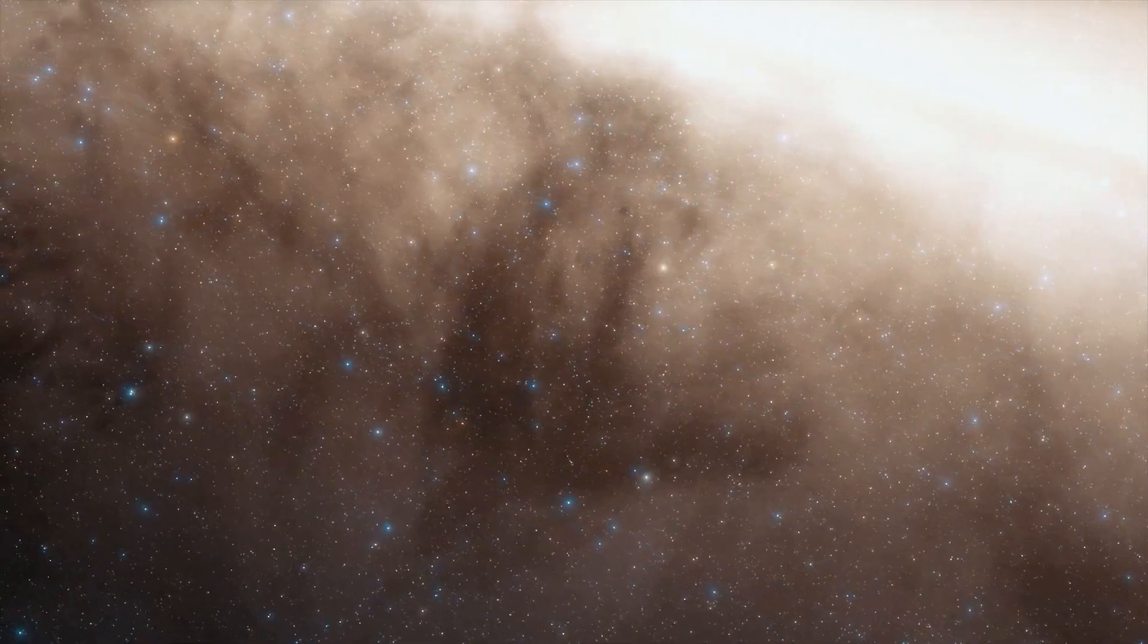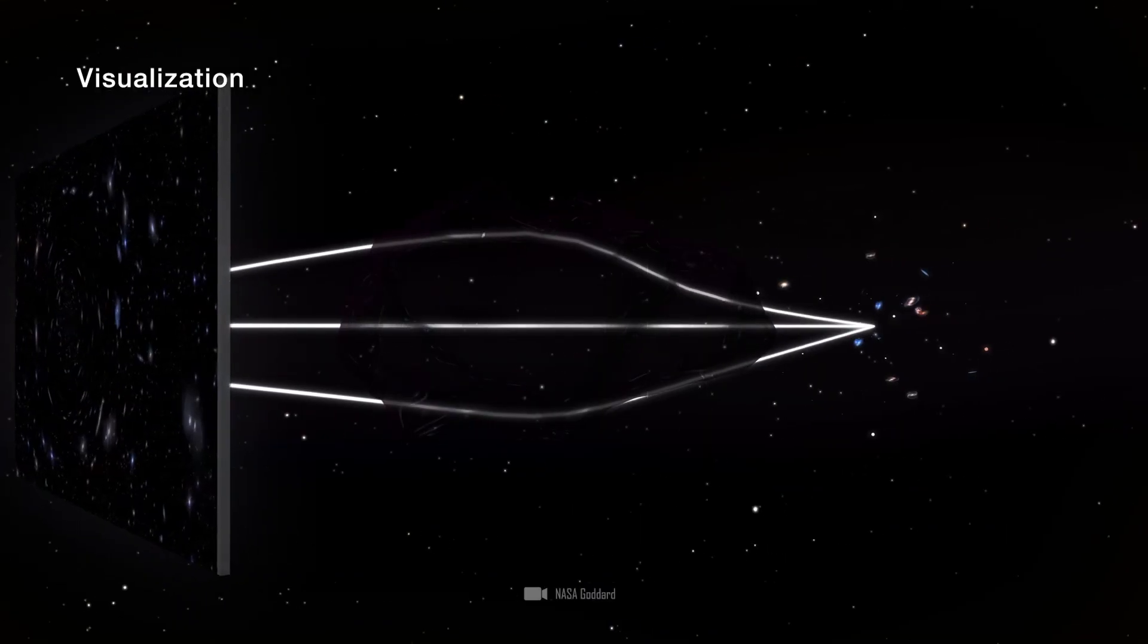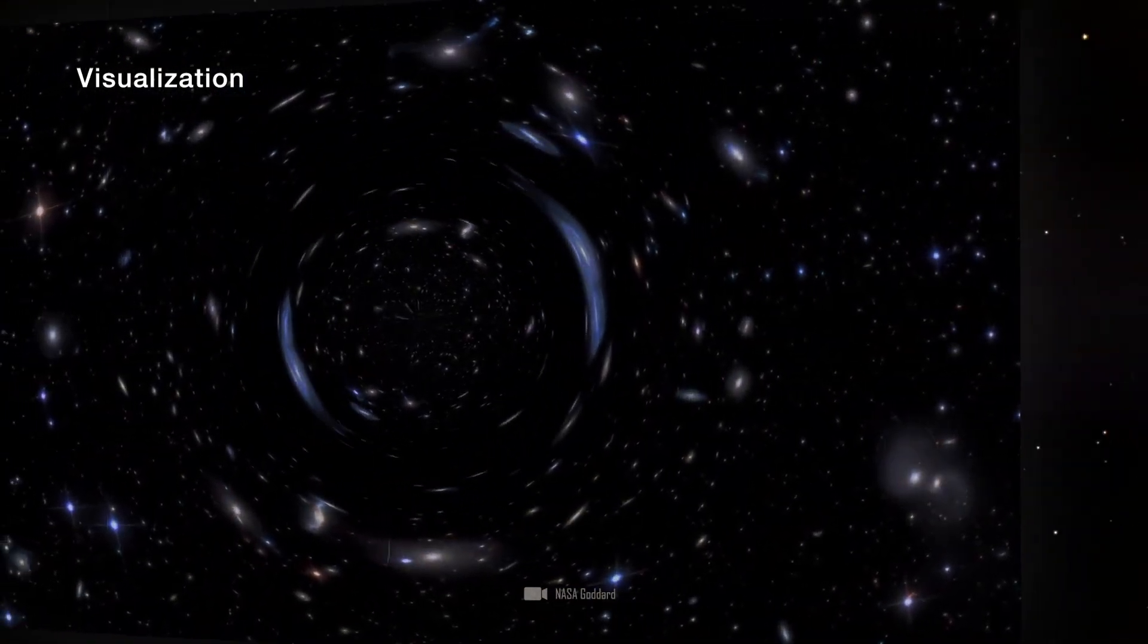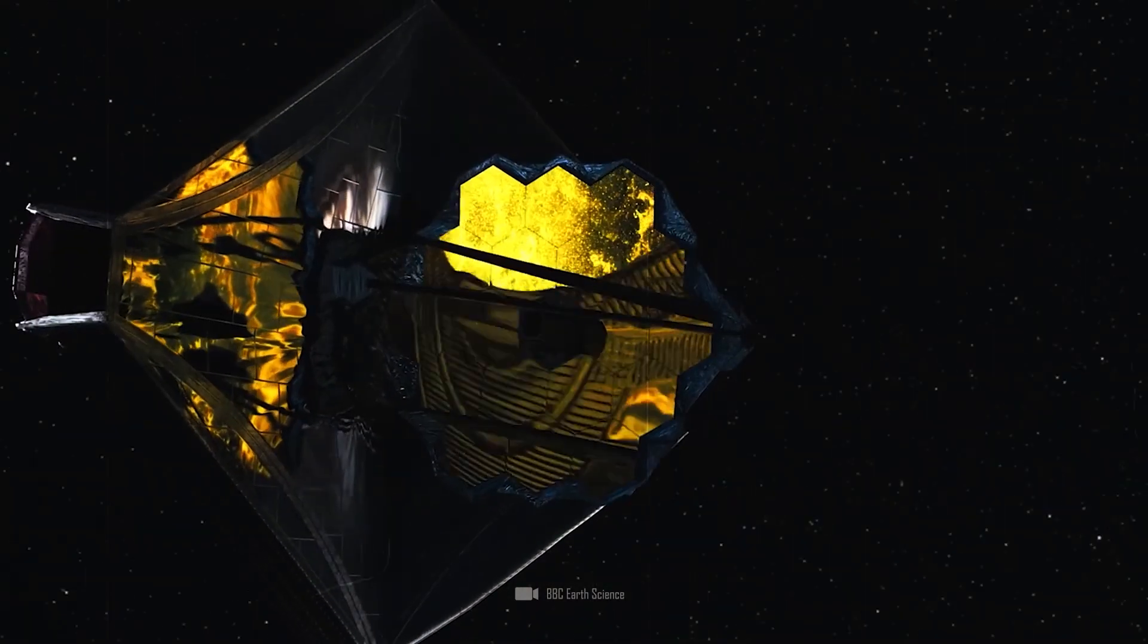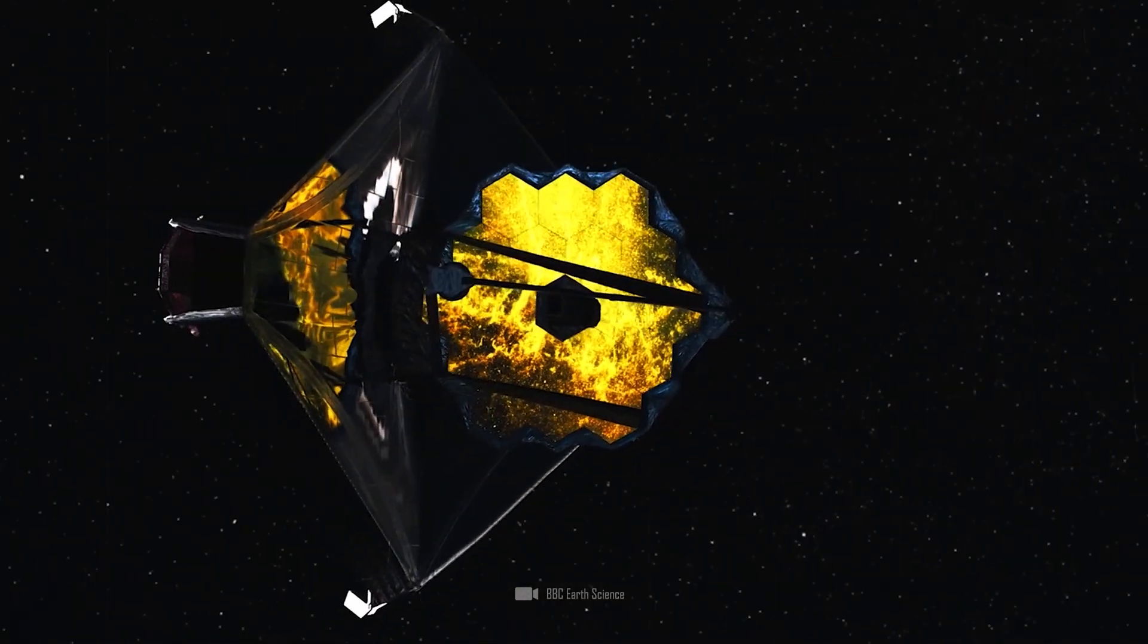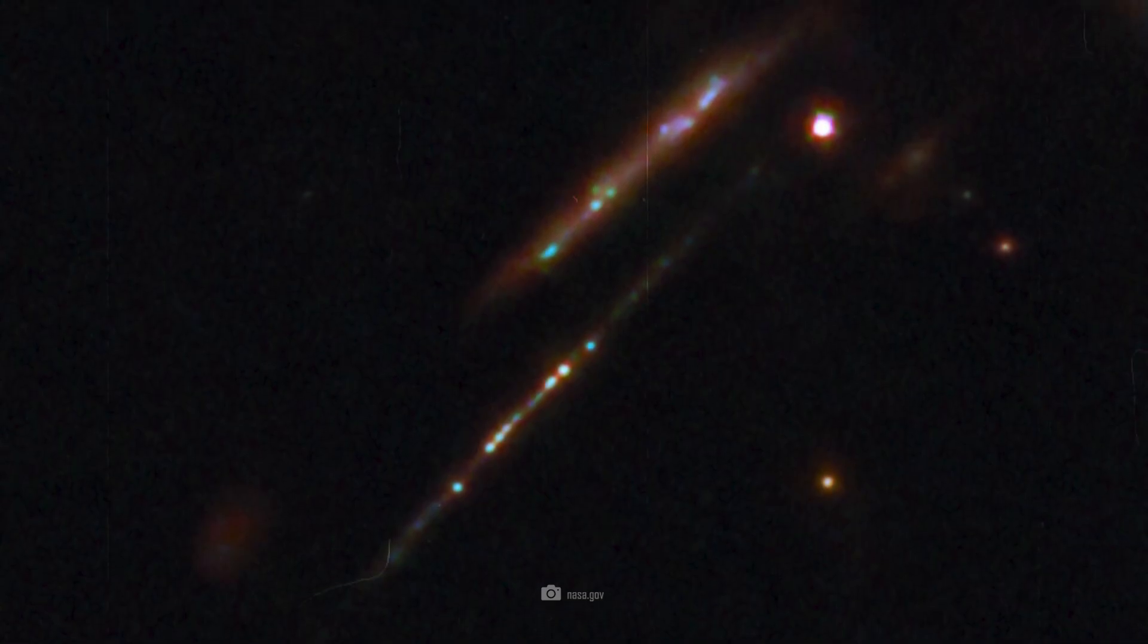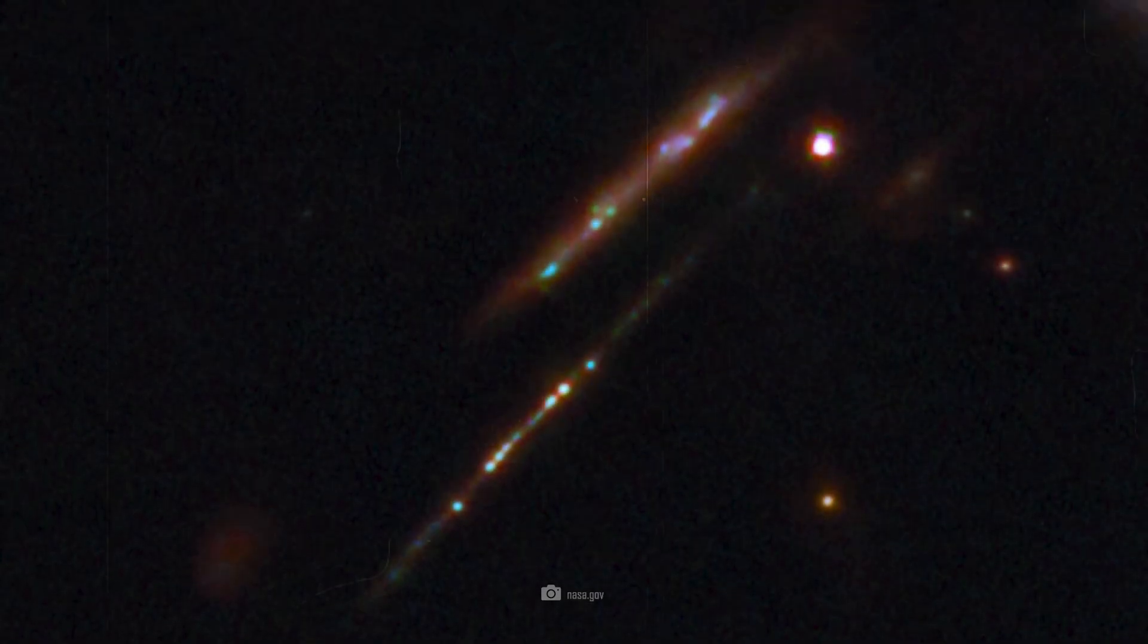This phenomenon, known as the gravitational lensing effect, allows astronomers to observe distant objects that would otherwise be too faint or too far away. The JWST has used this phenomenon to observe the Cosmic Gems Arc galaxy. This galaxy got its unusual name from its optical resemblance to a very fine crescent moon.